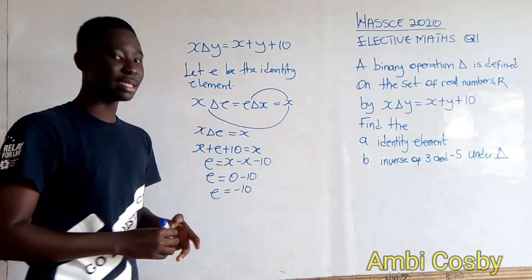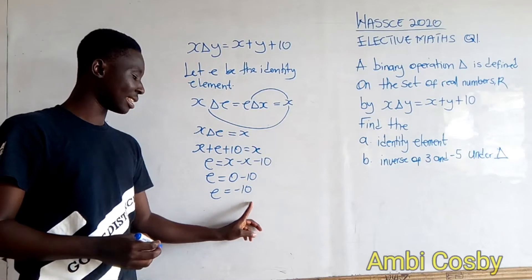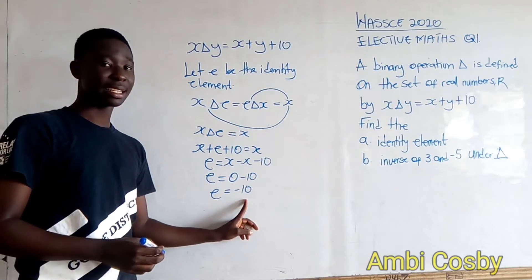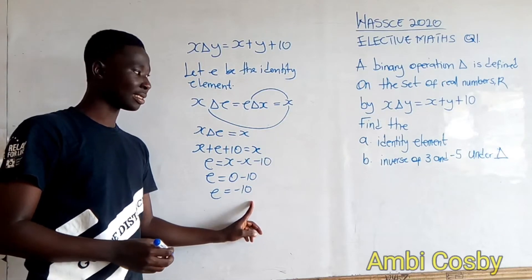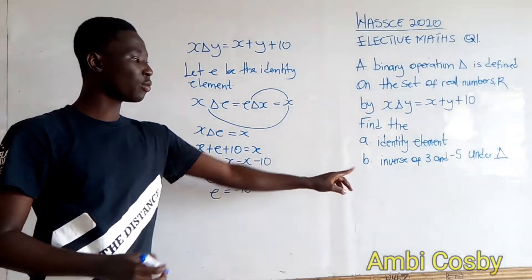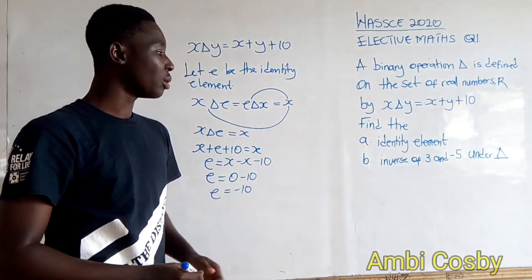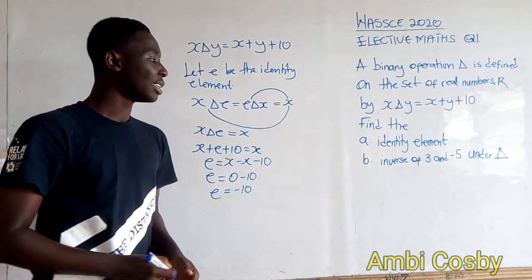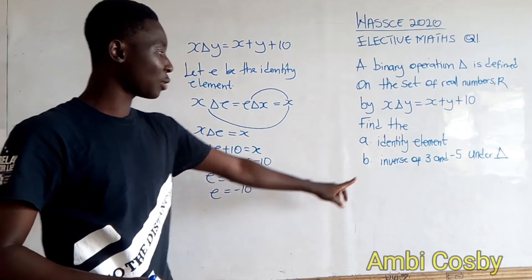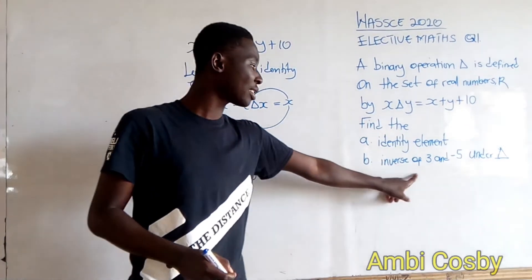So the identity element is -10. Now let's move on to part (b), finding the inverse of 3 and -5 under the operation.